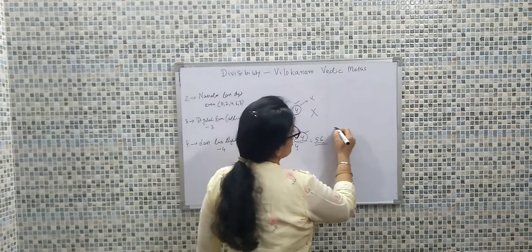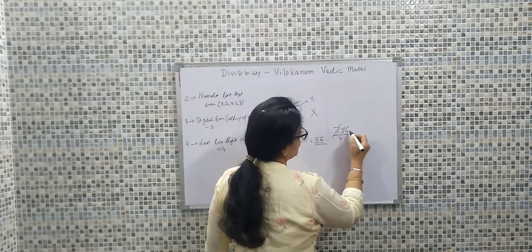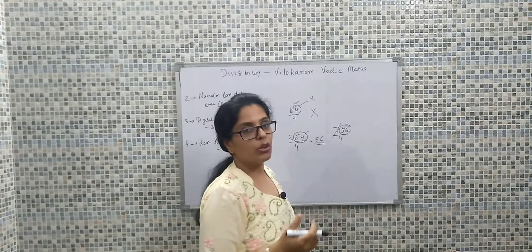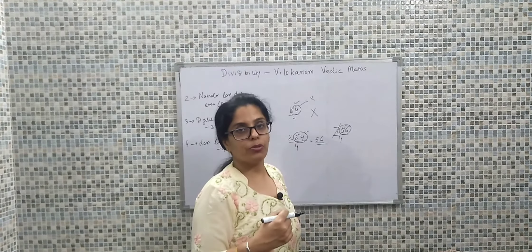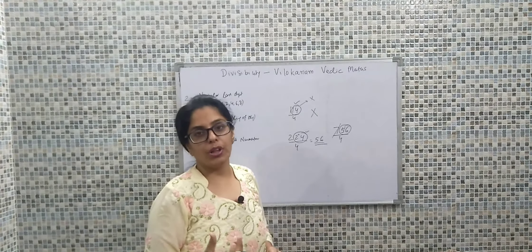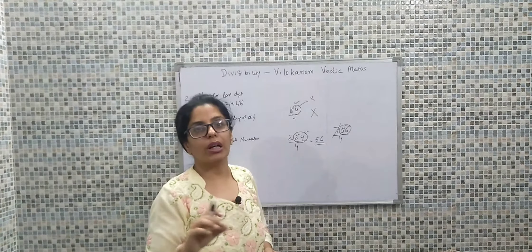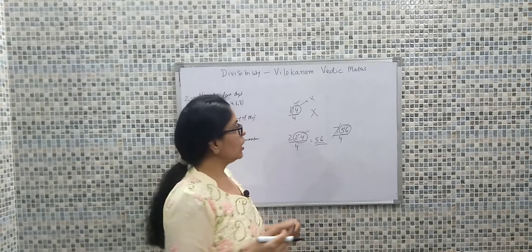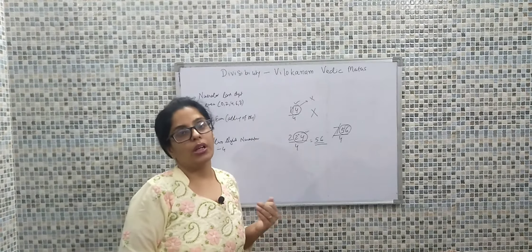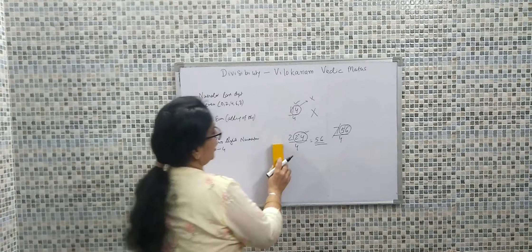Let's take another example: 756. The last two digits are 56. Is 56 divisible by four? Four ones are four, four fours are sixteen — yes, fifty-six is divisible by four. Hence the whole number 756 is divisible by four. Especially in competitive exams where we work with long values, we can't check the whole value. So using these rules, we simply extract the last two digits and conclude whether the number is divisible by four or not.